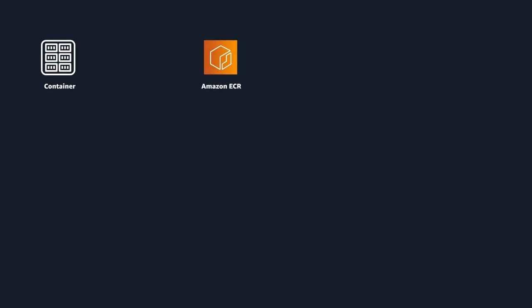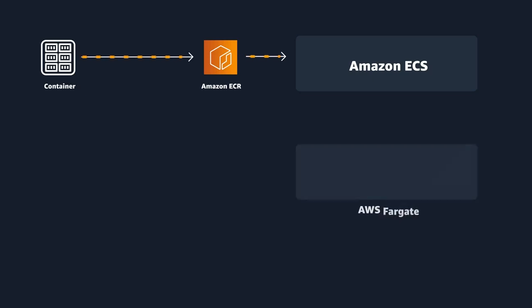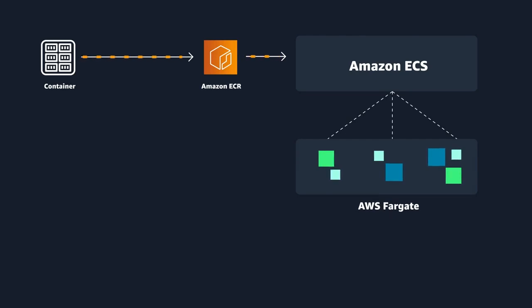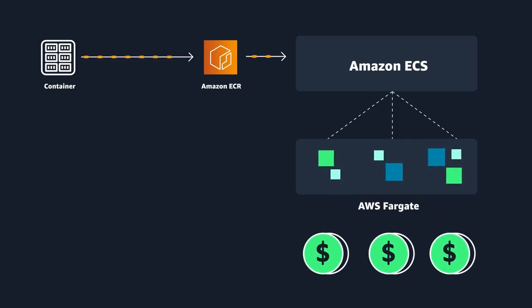The way you work with Fargate is you first build your container images and push them into a repository, like Amazon Elastic Container Registry, for example, which is a place where you can store container images for them to be pulled and deployed from. So you have your container images in your repo, and then you define memory and compute resources for your task if you're using ECS, or your pod if you're using EKS. Then you run your containers, and at the end you only pay for the amount of vCPU, memory, and storage resources consumed by your containerized applications.